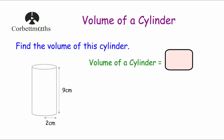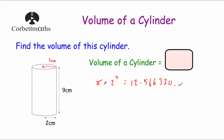So here's our first example. We've been given a cylinder with a height of 9 centimetres and a radius — the distance from the centre to the edge of the circle — of 2 centimetres. To find the volume, I'm going to find the area of the circle and then multiply by the height. The area of a circle is pi r squared, so we're going to do pi multiplied by 2 squared, which gives us 4 pi, or 12.566 centimetres squared.